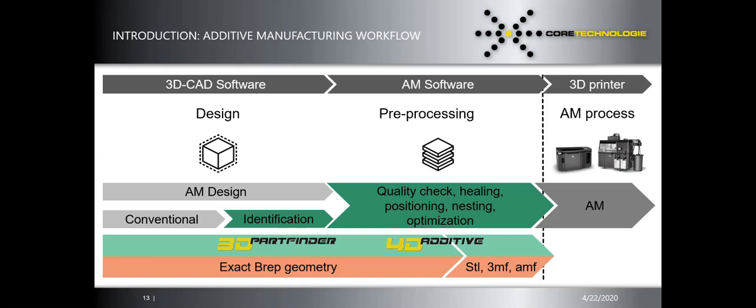The next step in pre-processing is where 4D Additive comes in — to pre-process files and send native CAD files to the printer. This is all based on the exact representation of the parts. Together, 3D Pathfinder and 4D Additive enable a consistent workflow that integrates into the AM process.